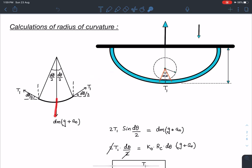So here effective weight of this will become dm into g plus a0 for this element and the tension T1 is acting T1 and T1 here and this angle is d theta by 2. So I can say the net force towards the center of this will become 2T sine d theta by 2, which is balanced by the effective weight of it, which is dm into g plus a0.